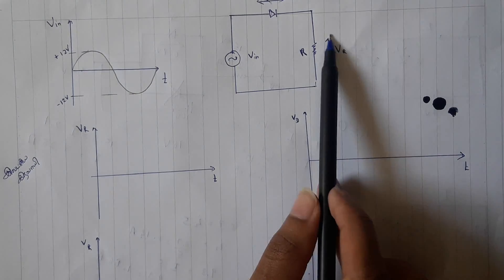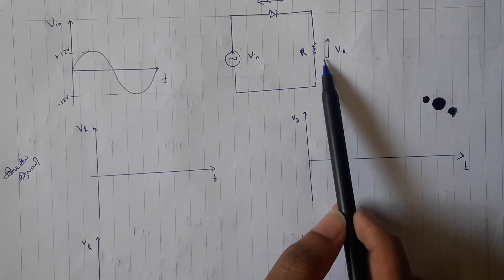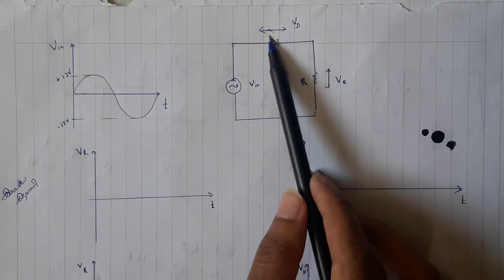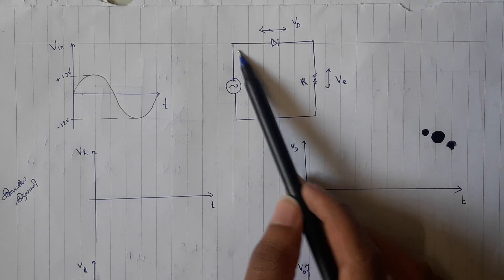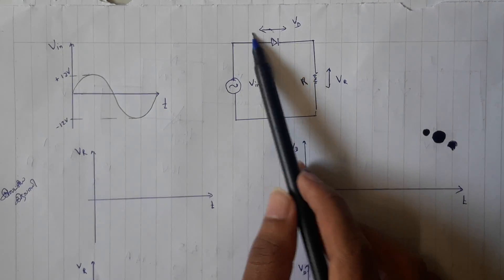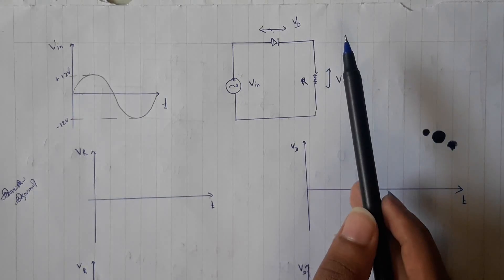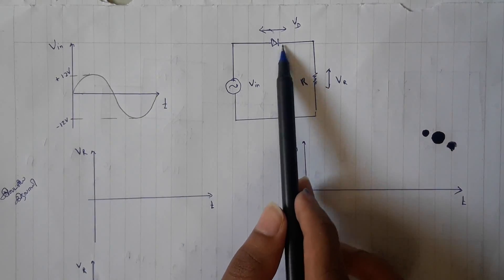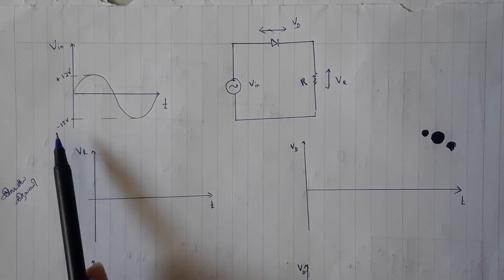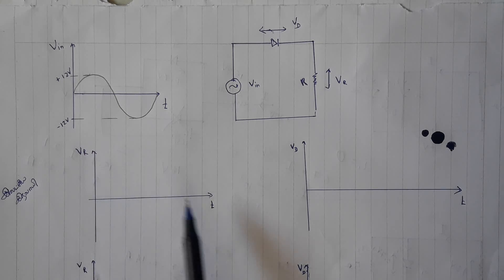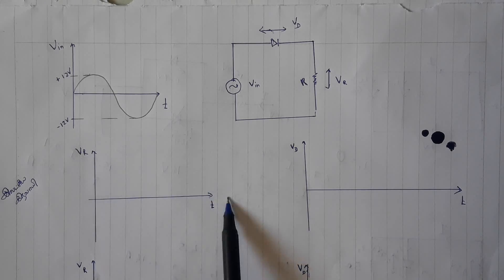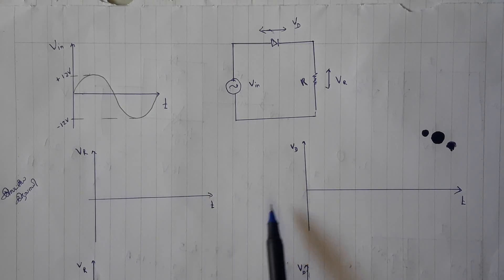This is a battery. The battery is connected to V, R. This battery is connected to V, D. In this battery, it is available in the same way. That is VR. VR will be used.